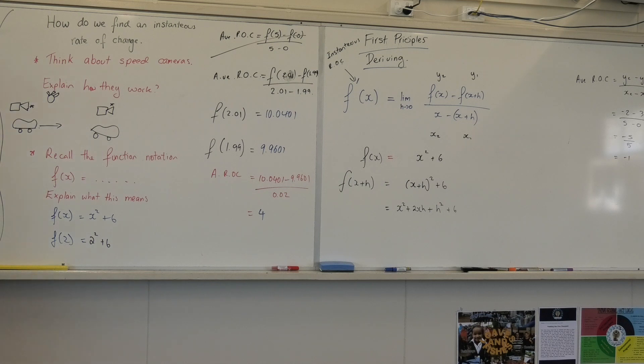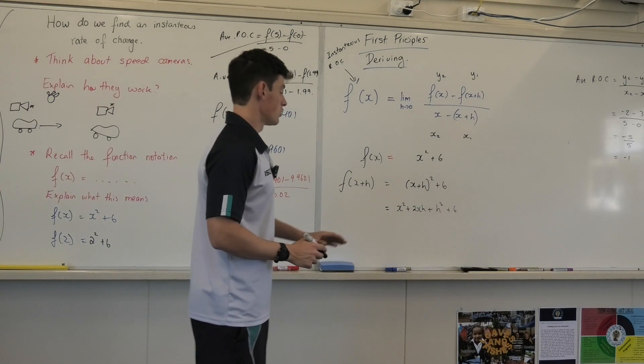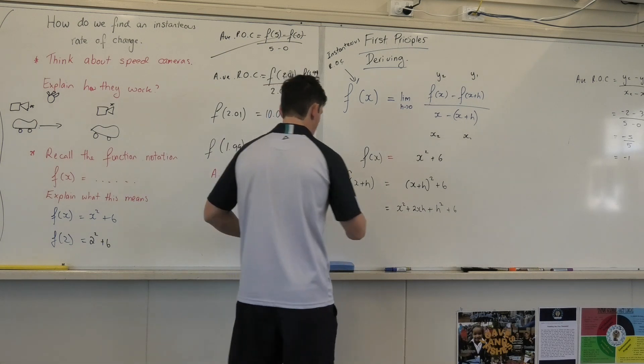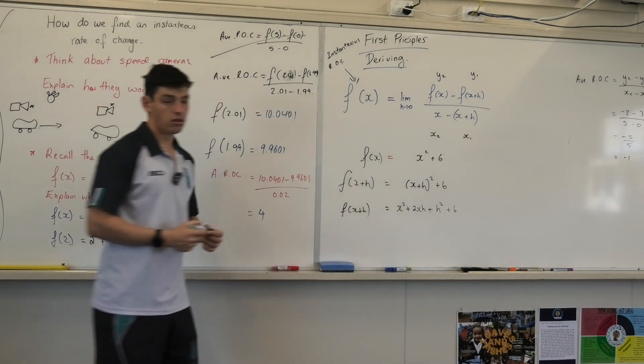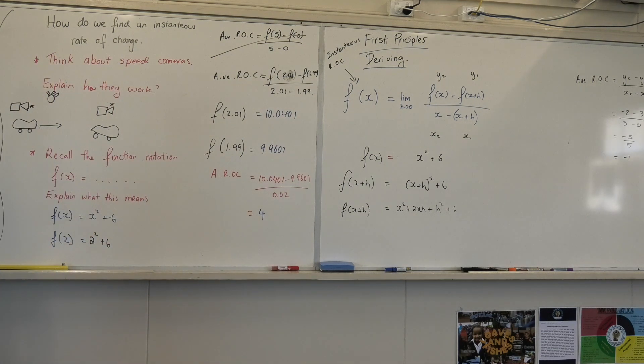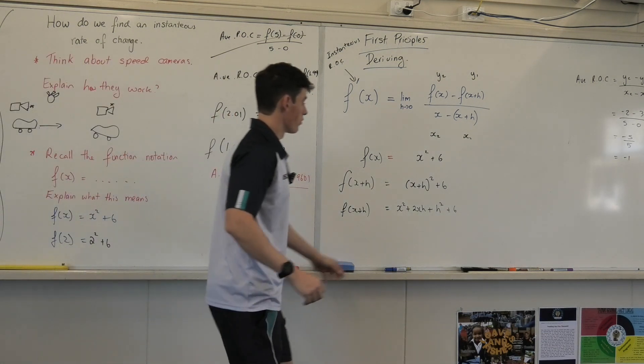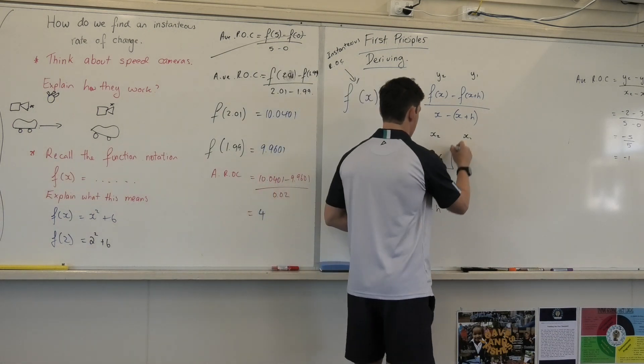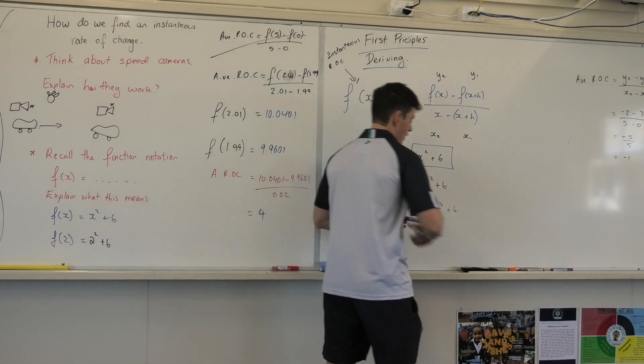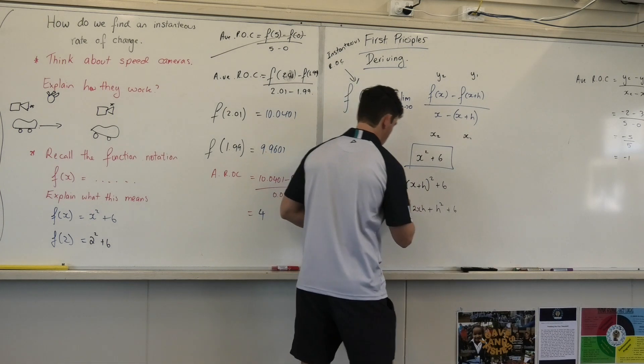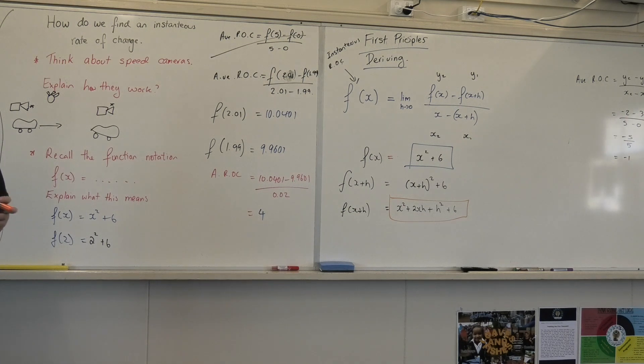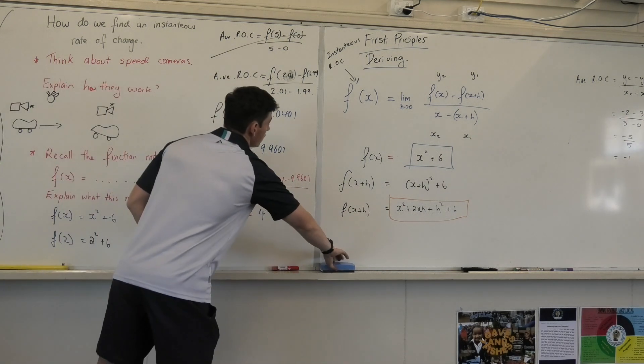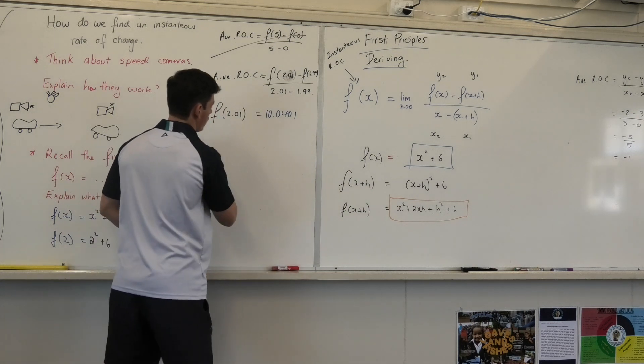Make sense? So I've got fx and fx plus h. So what I'm going to do now is sub this back into my original formula. So I'm going to replace fx with this. And we're going to replace fx plus h with this. I'll do that over.